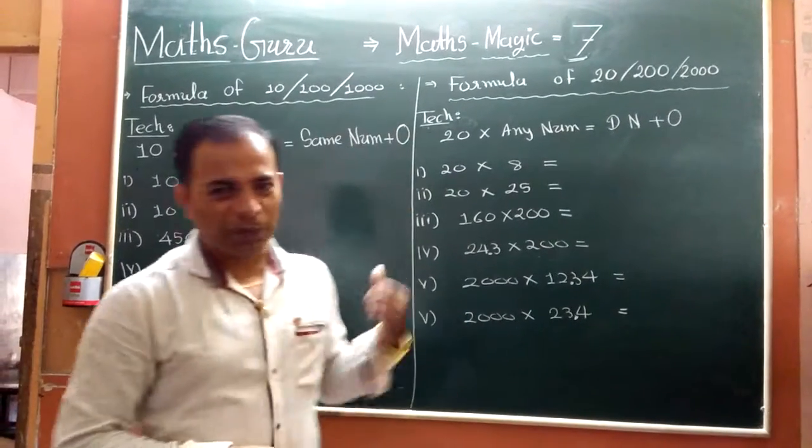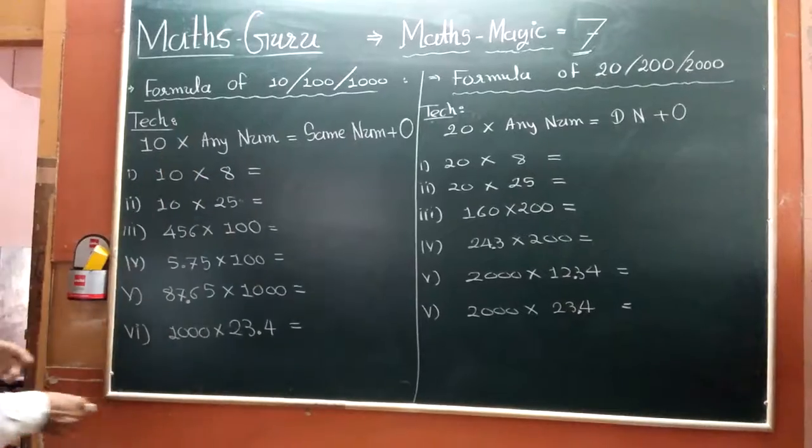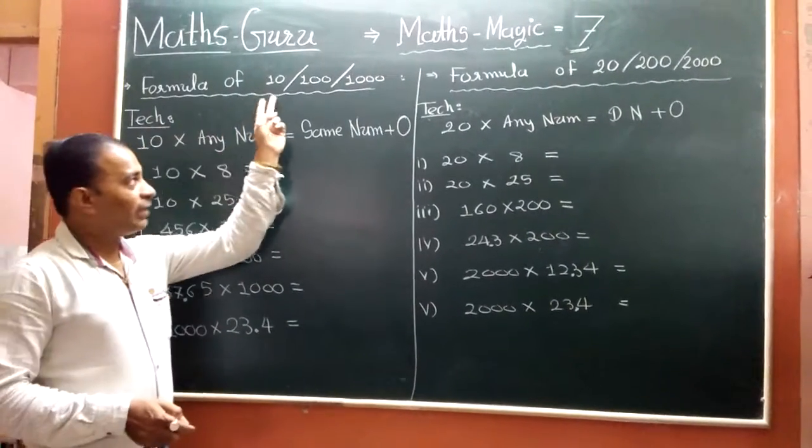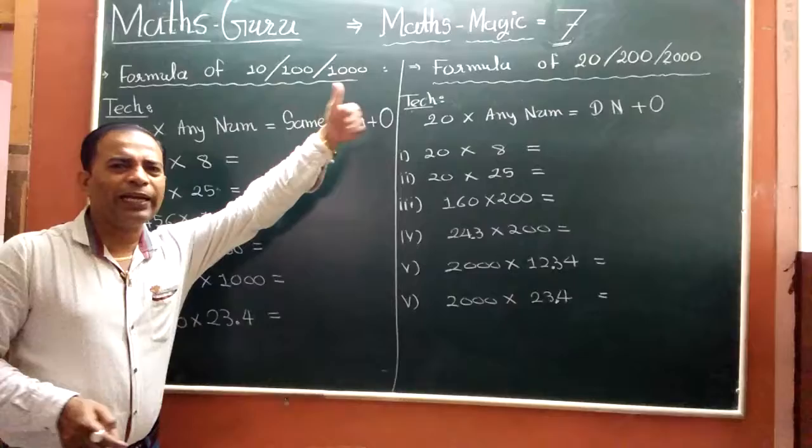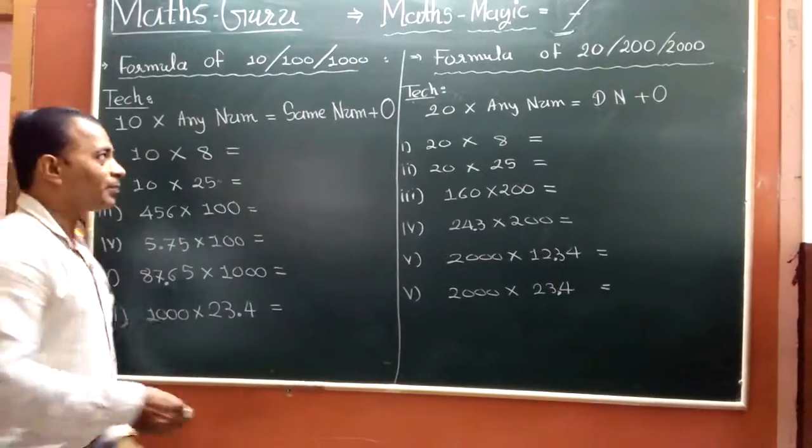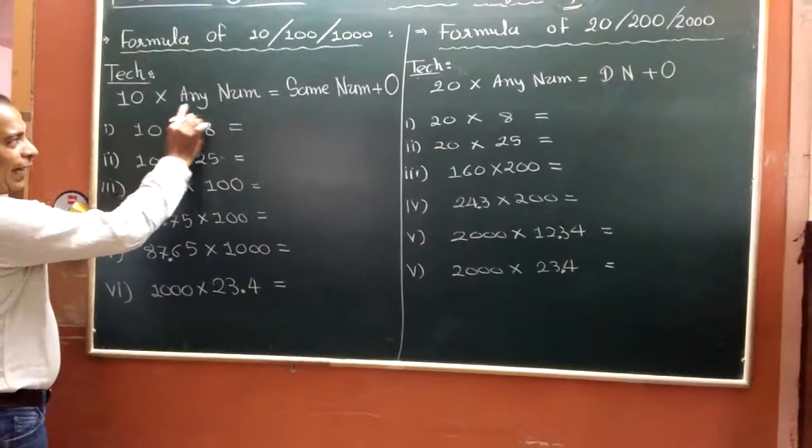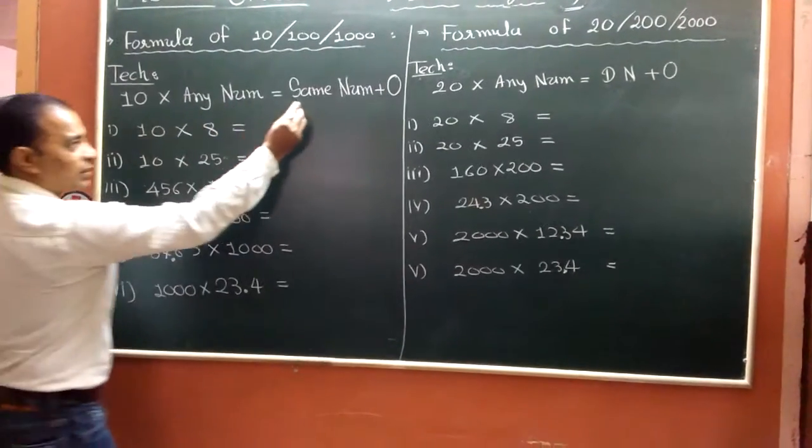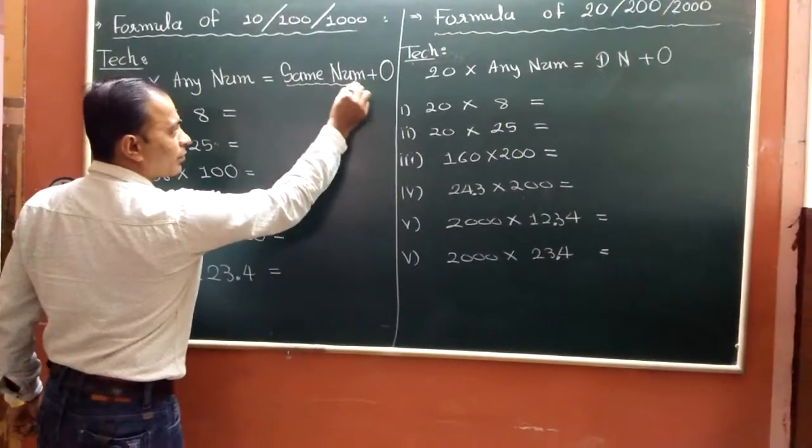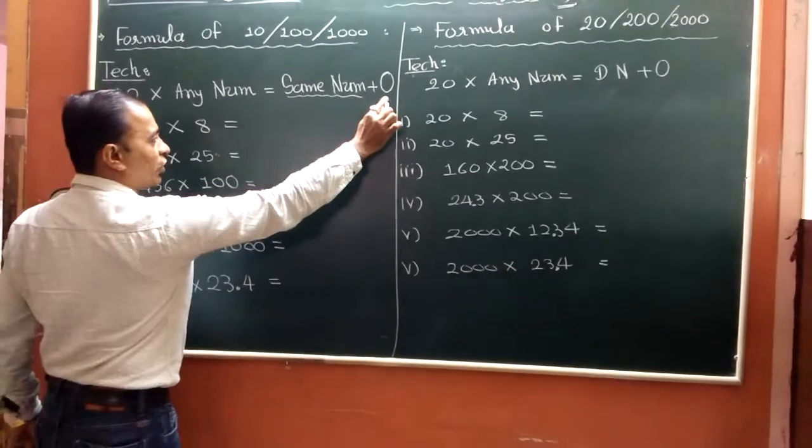Plus the new formula of 10, new formula of 10, 100, 1000, any zero is a number. Technique: 10 into any number, answer write as same number plus 0.